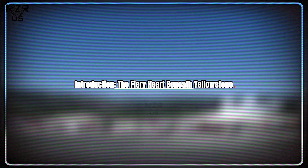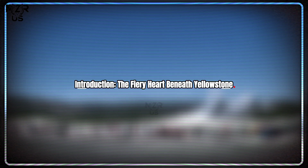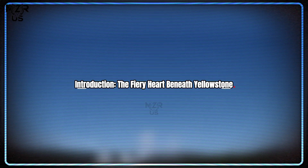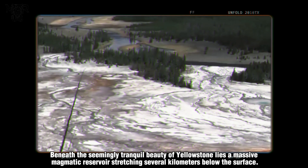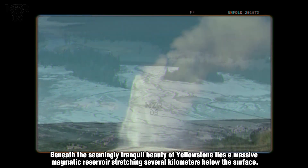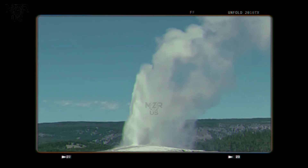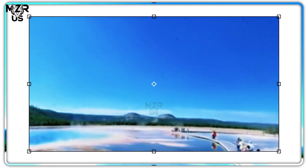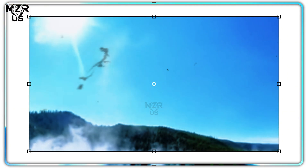Introduction: The Fiery Heart Beneath Yellowstone. Beneath the seemingly tranquil beauty of Yellowstone lies a massive magmatic reservoir stretching several kilometers below the surface. This system drives the park's 10,000 hydrothermal features — geysers, fumaroles, hot springs, and mud pots — through the continuous release of magmatic gases and heat.